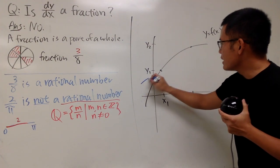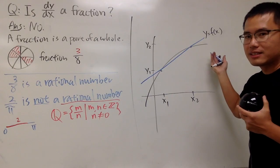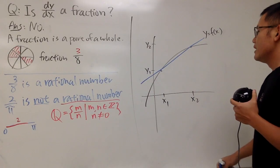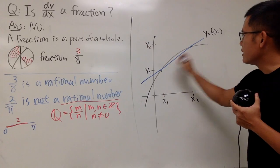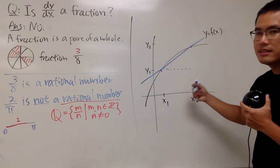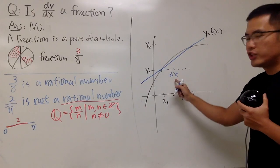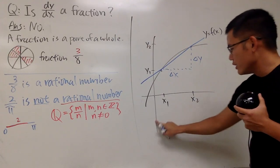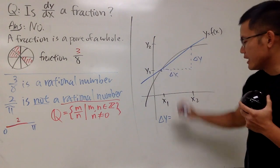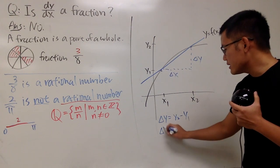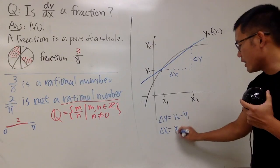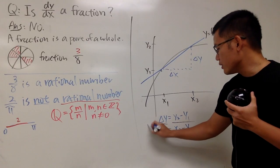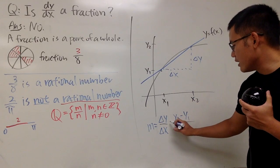We have a straight blue line connecting the two points. To go from the first point to the second, we travel horizontally — that distance is delta x, the change in x values. Then we go vertically — that's delta y. Delta y is just y₂ minus y₁, and delta x is just x₂ minus x₁. If you divide, you get the usual slope formula. So the slope is delta y over delta x — that's the slope formula.